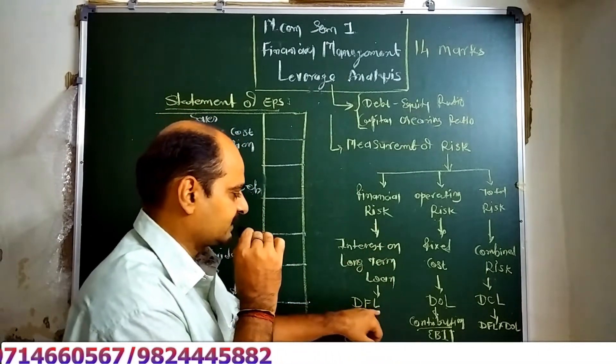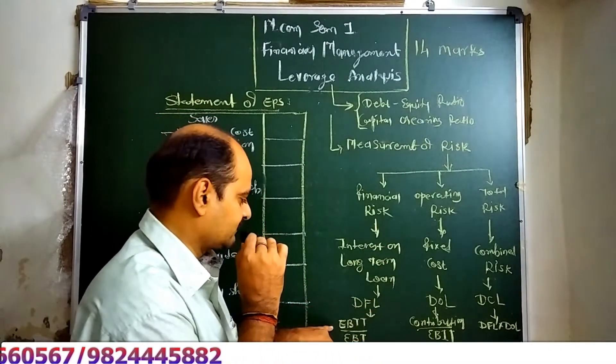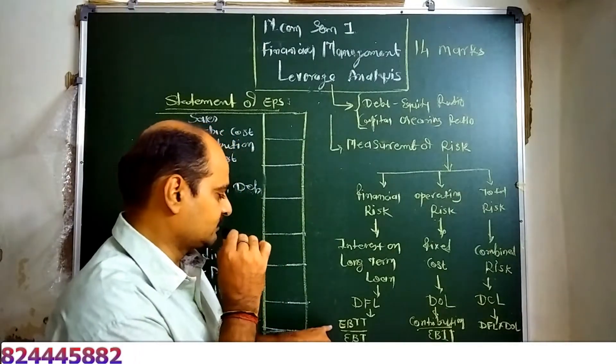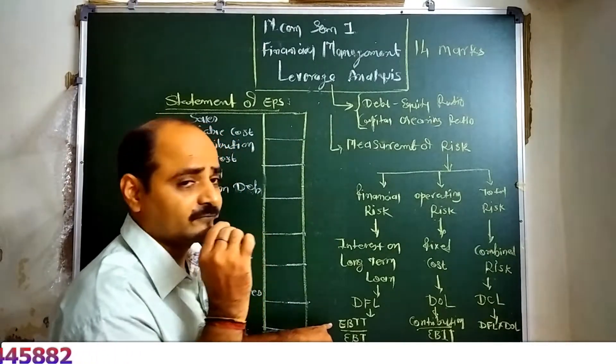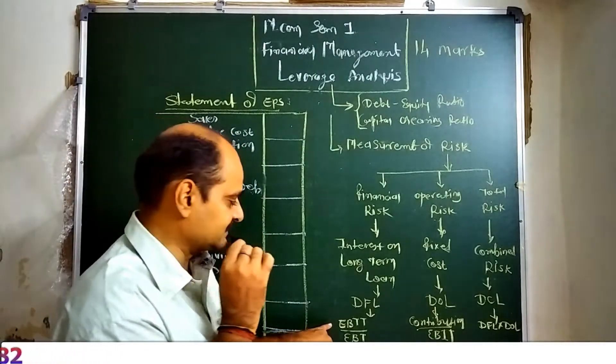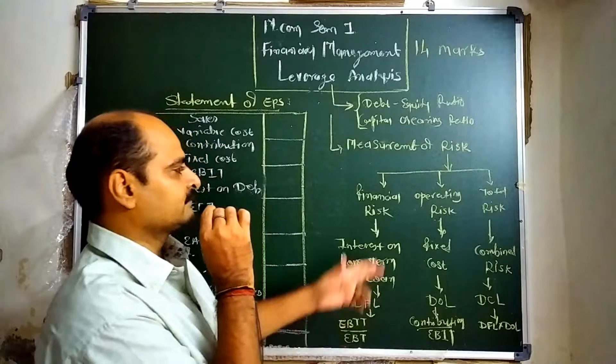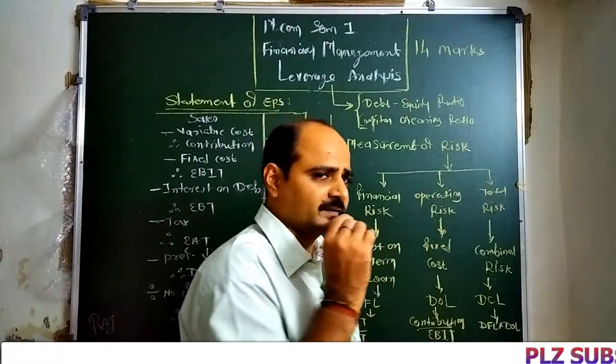The degree of financial leverage formula is EBIT upon EBT — that is, Earnings Before Interest and Tax divided by Earnings Before Tax. The second type is Operating Risk.